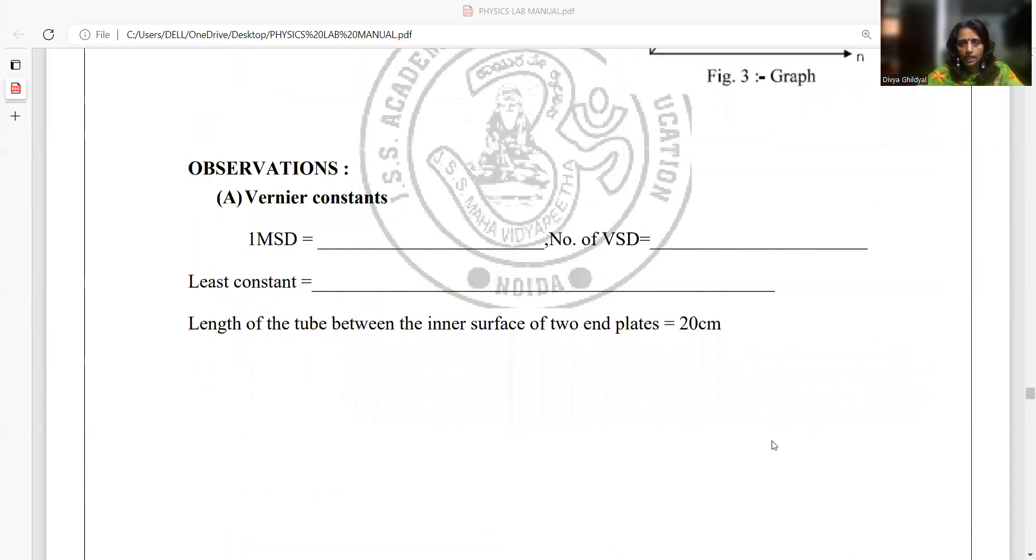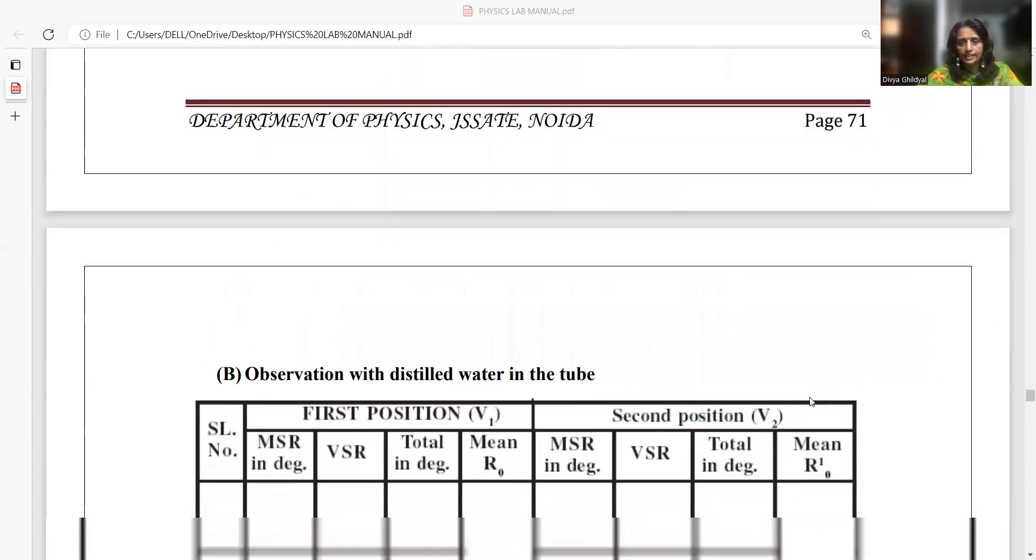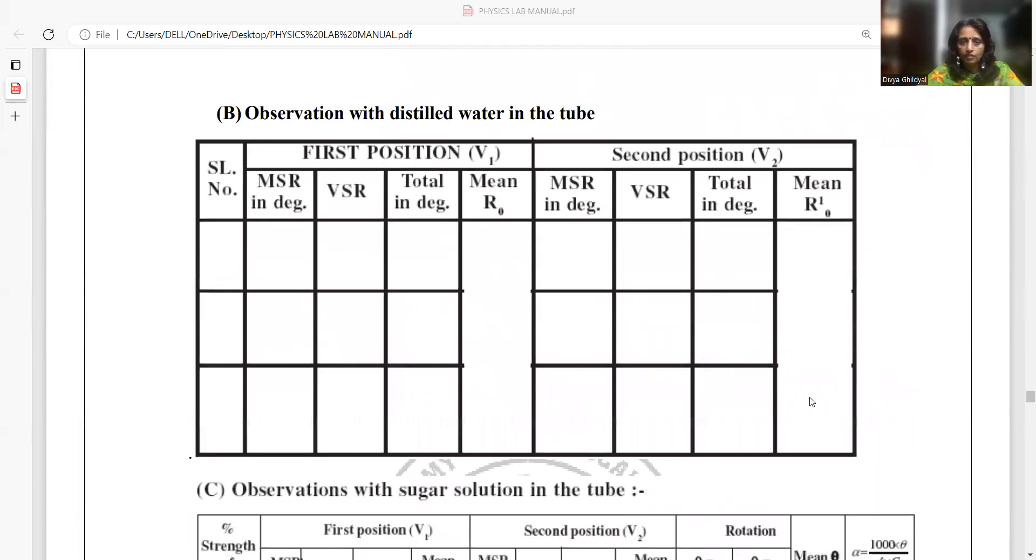Once I see my polarized light, I am going to start taking readings. My least count for the polarimeter will be 0.1 degree and length of tube is 20 centimeters. My observation table will consist of two positions of the vernier: first position where I will see full moon on my 0 to 360 degree scale. I will take the reading of main scale, vernier scale. Total I will write as main scale plus vernier scale times least count, that is 0.1. And at another position of 180 degree difference, I will get the second position of my vernier.